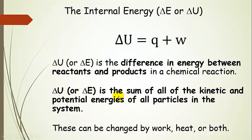Delta U is actually the sum of all the kinetic and potential energies of all the particles in the system. It's called the internal energy — basically the energy of that system, adding together all the kinetic and potential energies, all the different kinds, for all the particles. And these can be exchanged by work, heat, or both.